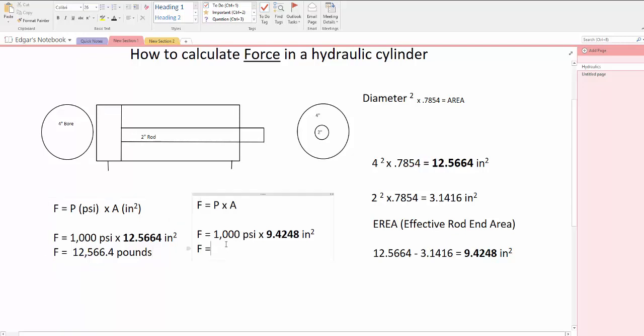Moving to the smaller area on the retract side, we multiply 1,000 times 9.4248, which gives you 9,424.8 pounds.